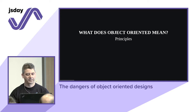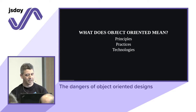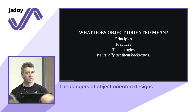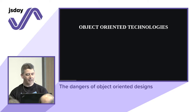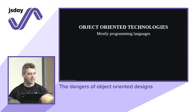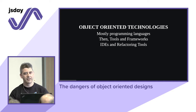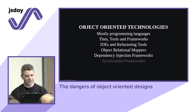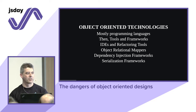There are principles, practices, and technologies, but the problem is we usually get them backwards. We start from the technologies — from the programming language we have and what it provides. The first thing is the programming language itself, then tools, frameworks, IDEs, refactoring tools, object-relational mappers, dependency injection frameworks, serialization frameworks — a huge stack, all built around the programming language.